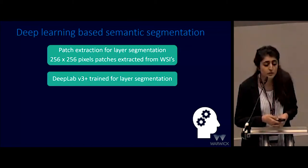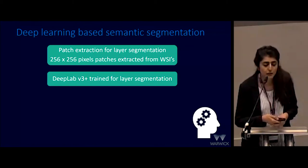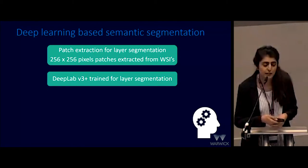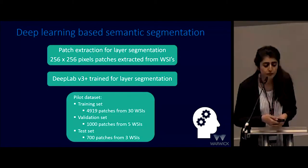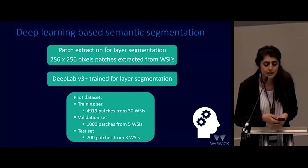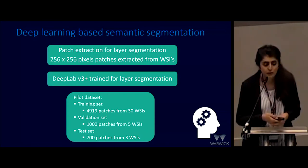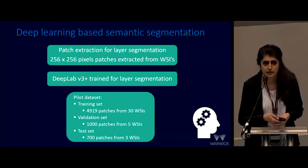The software used to train the deep neural network was DeepLab V3, which has a good history of image analysis for histology. Our initial pilot dataset included 30 whole slide images for the training set, five for the validation set, and three for the test set.